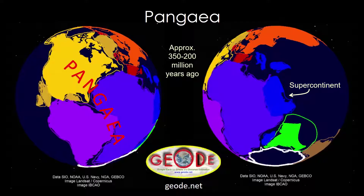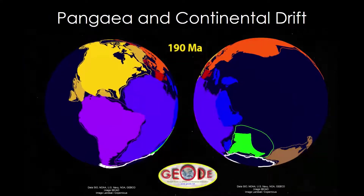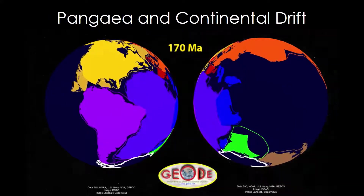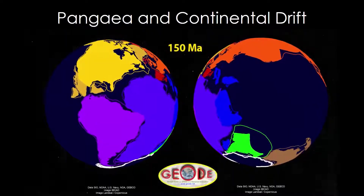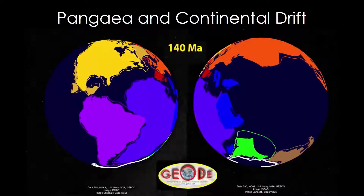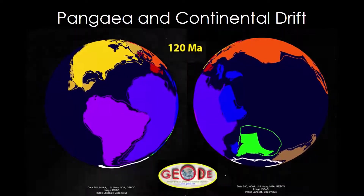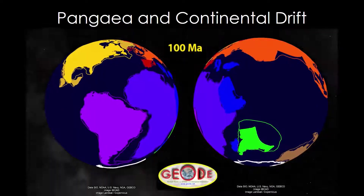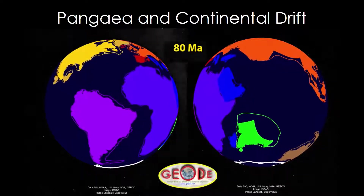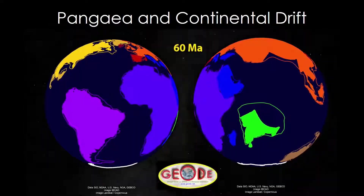These colorful illustrations of Pangaea were created by our colleagues at geo.net. They also produced a great animation that shows what happened when Pangaea started to break up around 200 million years ago. Wegener believed that the shapes of most of the continents we know today were formed when Pangaea broke up and the landmasses drifted to their current locations.